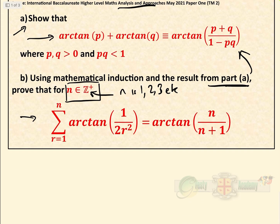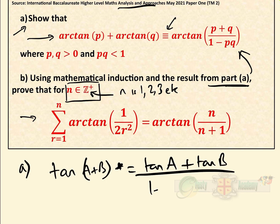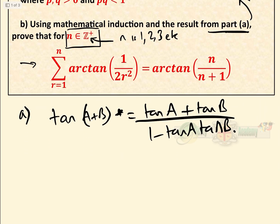So let's look at part A first. We have to show that arctan P plus arctan Q is exactly the same — identical — to arctan of P plus Q over 1 minus PQ. We'll start with the well-known tan addition formula: tan(A + B) equals tan A plus tan B over 1 minus tan A tan B. That's our starting point.